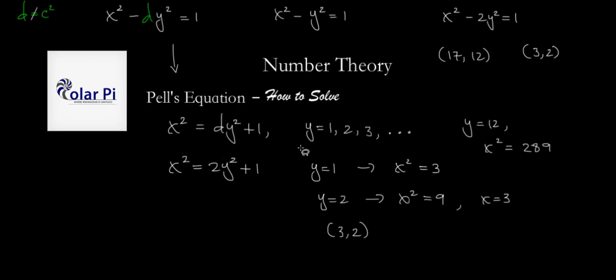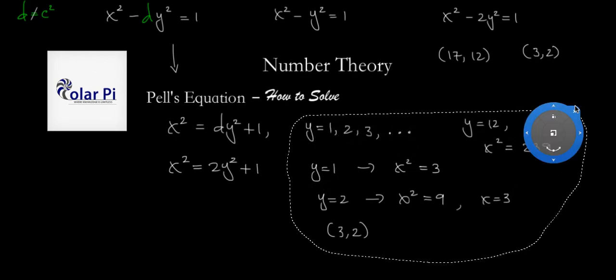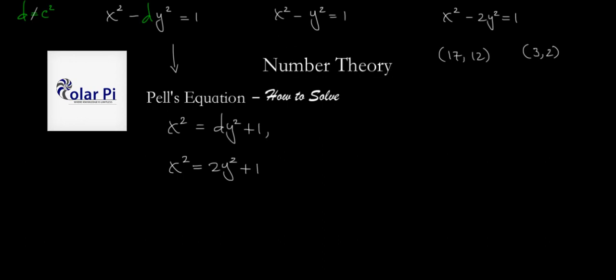But this is a brutal way to do it. There's got to be a better way, and yes, there is. You first have to use the strategy I just showed to find one solution. But you only need to find one solution. Once you have one solution, like (3, 2), then you can get more by doing the following. This is how you generally solve these.